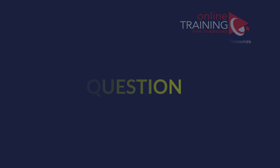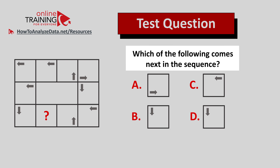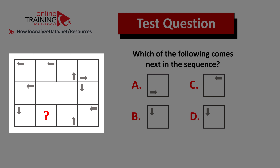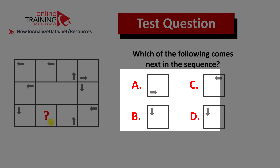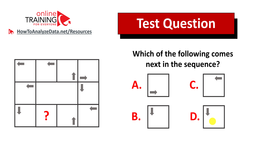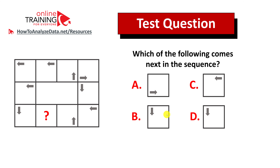Let me share a tricky question testing pattern recognition and logical reasoning skills: which of the following comes next in the sequence? You're presented with a rectangle that has multiple squares, one of which is missing with a question mark inside. Four choices — A, B, C, and D. Pause this video and see if you can come up with the solution on your own.